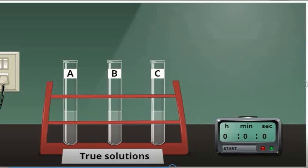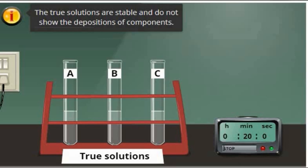Let us check the stability of true solutions by letting them stand for 20 minutes. After 20 minutes, no sediments were formed at the bottom of the test tubes. This only shows that true solutions are stable and do not show the deposition of components. That's why the components of true solutions cannot be separated by decantation or sedimentation.